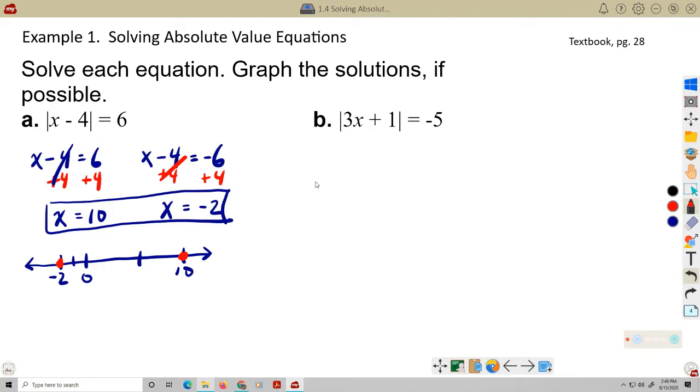Example 1B, absolute value of 3x plus 1 equals negative 5. Absolute value, the left side is an absolute value. The right side is a negative number. This can never be. Absolute values can never be negative. So, this is a false statement. This is like saying the sky is purple or something. It's not ever true. So, no solution. Absolute values cannot be a negative value.